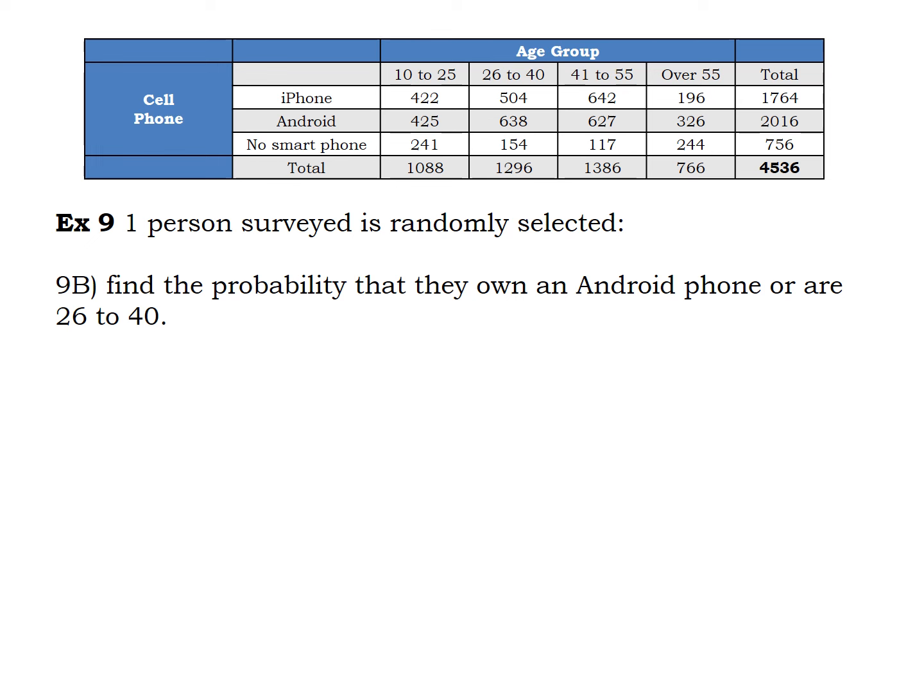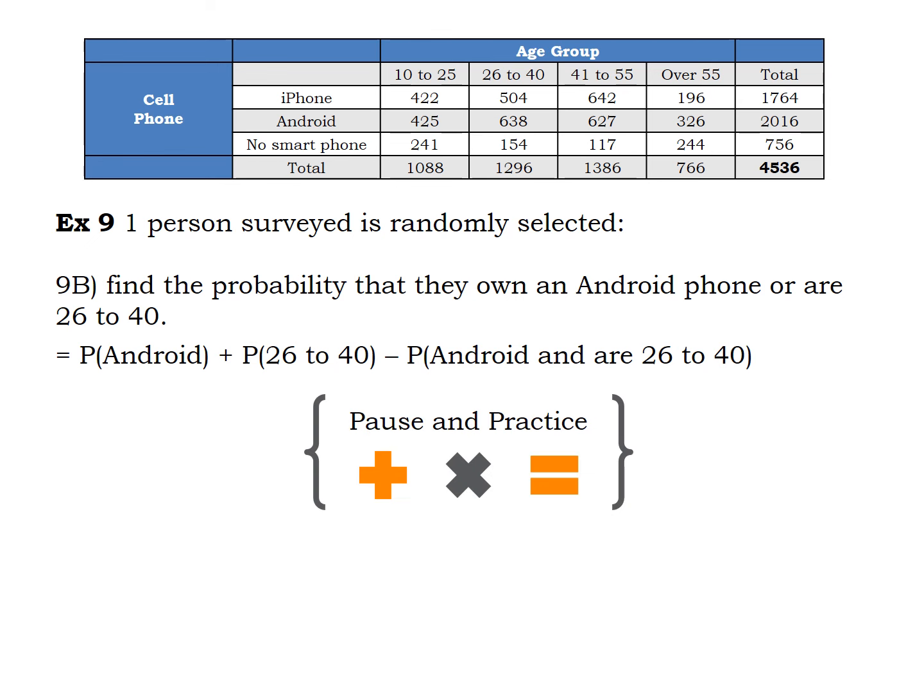Let's look at example B. We want the probability that a person owns an Android phone or is in the 26 to 40 age range. Write out what the formula would be in the context of this problem, then go ahead and pause the video to fill in all the numbers.